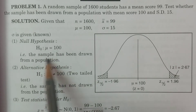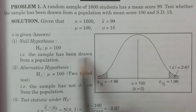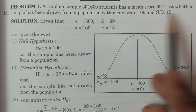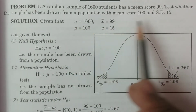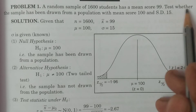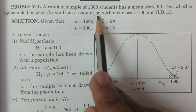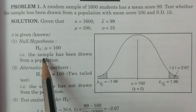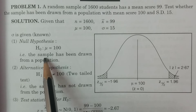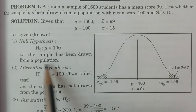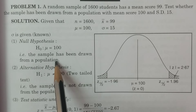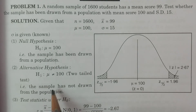The null hypothesis states that the sample has been drawn from the population, as the question asks to test whether the sample has been drawn from the population with mean 100.